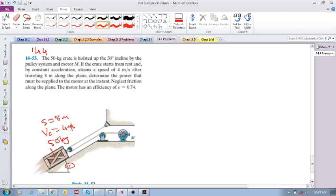Remember, this crate is moving up. This motor is pulling the crate up. Determine the power that must be supplied to the motor, P in. Neglect friction and we have mechanical efficiency equal to 0.74, so we know mechanical efficiency is P out over P in.